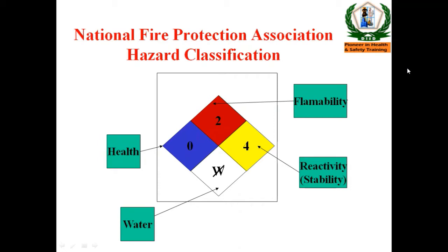If the section is red, it indicates that the chemical is flammable. The number written in the red section tells you how flammable the chemical is — indicating the degree of flammability.